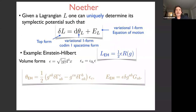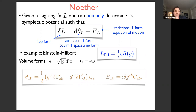Noether's theorem starts with the choice of a Lagrangian L, using bi-covariant calculus — a field variation delta and the Cartan calculus d as a spacetime differential. The first big result is that given the Lagrangian L, we can uniquely determine its symplectic potential theta_L such that the variation of the Lagrangian gives the equations of motion plus a boundary term, which is the differential of the symplectic potential.